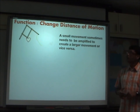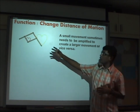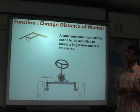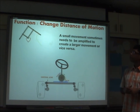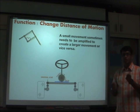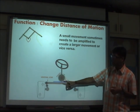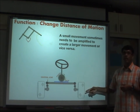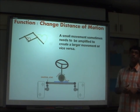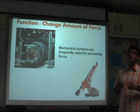Another function that mechanisms provide is change of distance of motion. What you see here is a simplified version of a machine called the pantograph, which helps you draw a smaller drawing and enlarge it into a bigger one. A small movement sometimes needs to be amplified to create a larger movement. As a driver, when you turn the steering wheel you're creating a very small motion, but other mechanisms such as the rack and pinion provide a larger motion at the wheel.